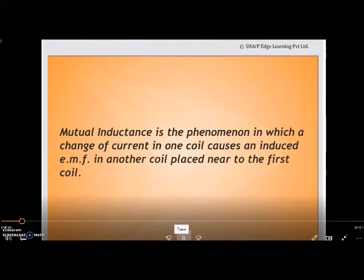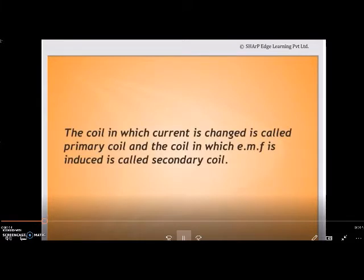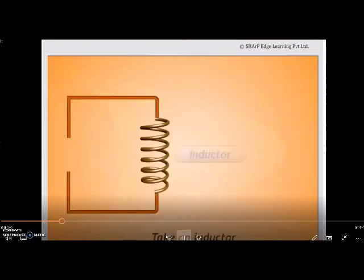Mutual inductance is the phenomenon in which change of current in one coil causes induced EMF in another coil placed near to the first coil. The coil in which the current is changed is called primary coil and the coil in which EMF is induced is called the secondary coil.